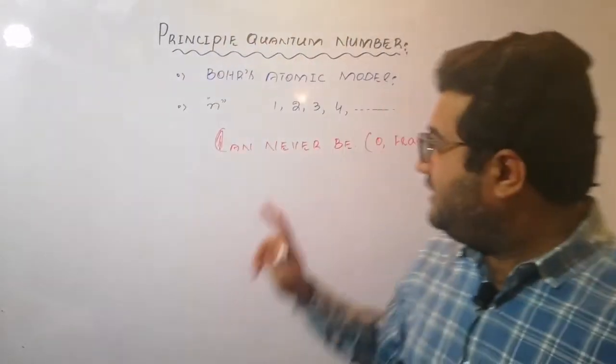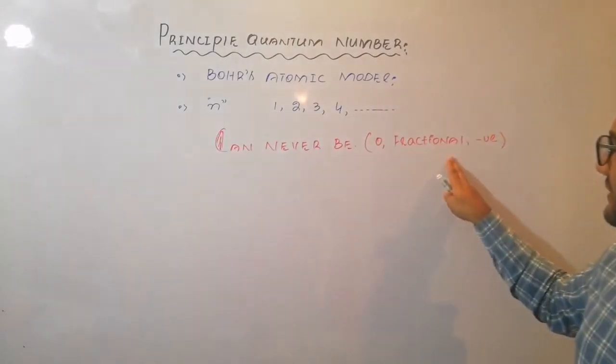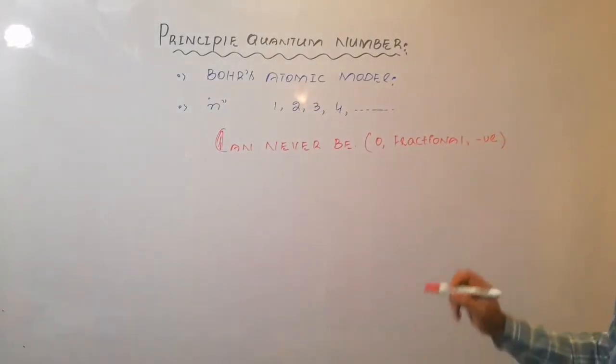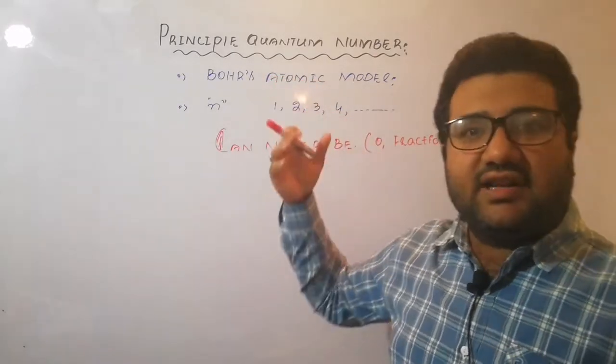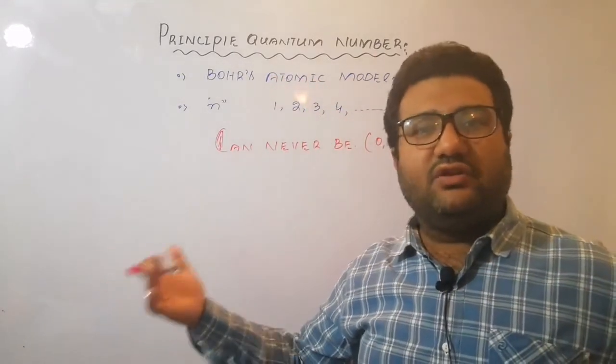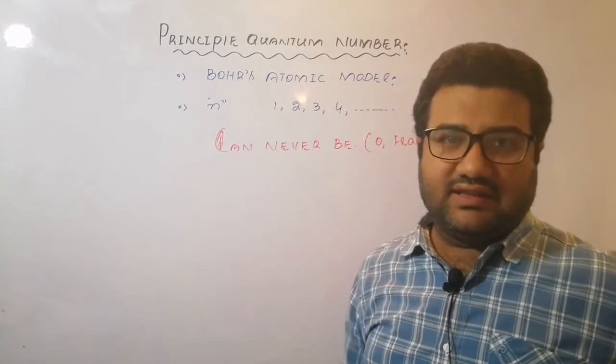It can never be 0, it can never be fractional, and it can never be negative. So this is the quantum number that has some fixed discrete values. You cannot write down any value in this case.